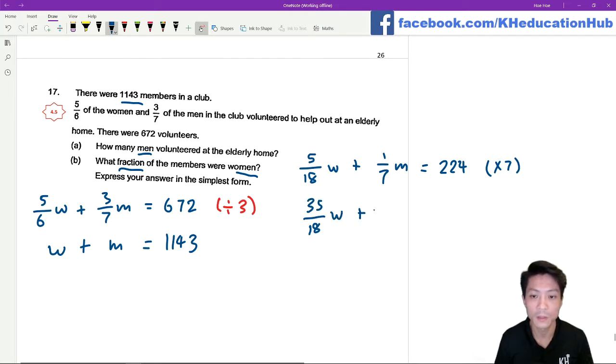35 over 18 of the women plus all the men is gonna be equal to 1568.